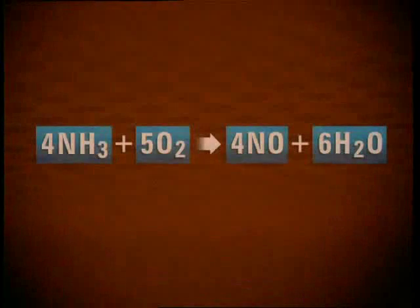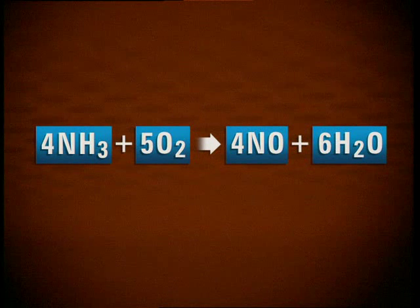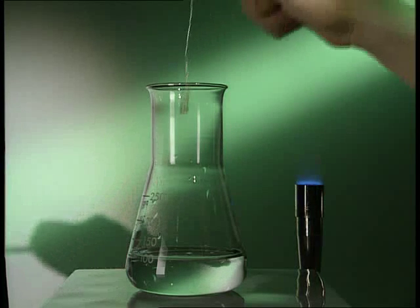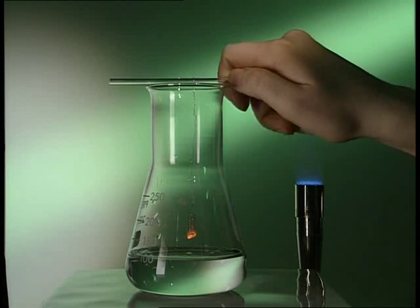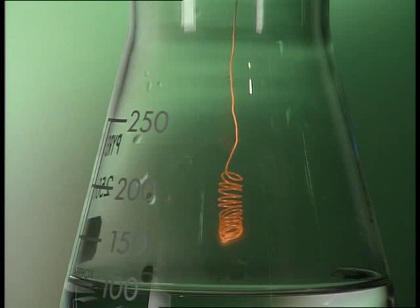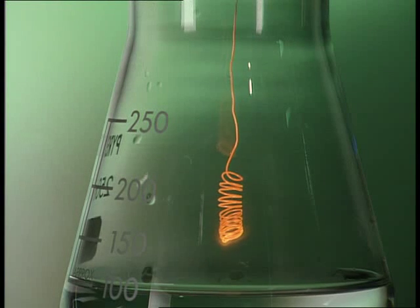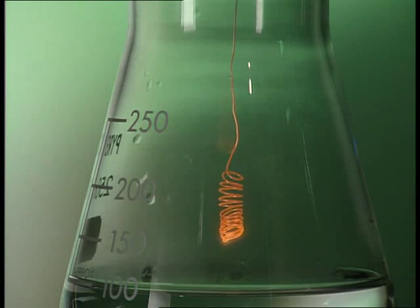Ammonia reacts with oxygen in the air to produce nitrogen monoxide and water. For the reaction to happen at a reasonable rate, it needs a platinum catalyst. See how a hot platinum wire glows when it's suspended above a solution of ammonia. It's a sign that ammonia vapor and oxygen are reacting. The same glow happens inside the industrial burner.